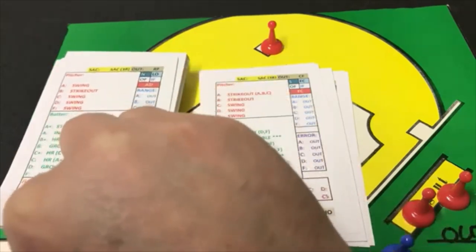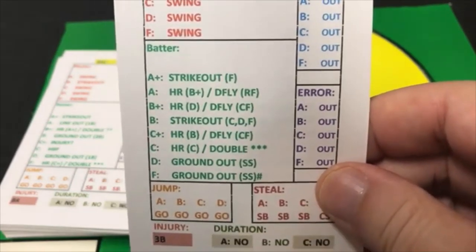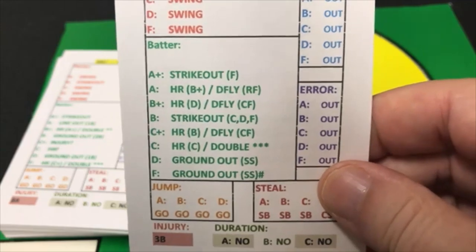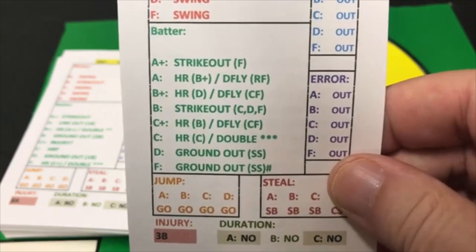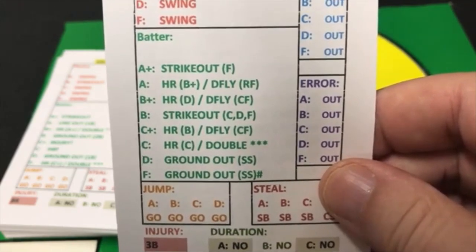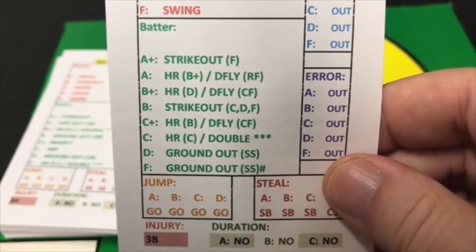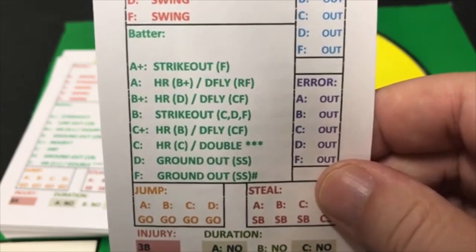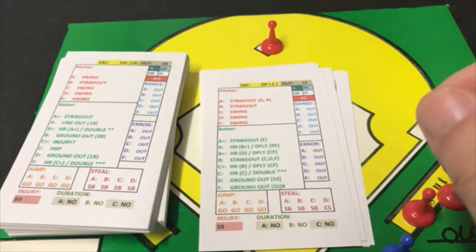We go to the bottom of the first. Eddie Collins is the first batter — an A batter against a C pitcher. The C pitcher gets a swing, and an A batter gets a home run if he's B-plus at home runs, which he is not. That's another thing with the 1919 set — there aren't guys with big home run ratings. Should they have made home run ratings relative to the era? That's a question for others. Anyway, it's a deep fly to right field — F9.